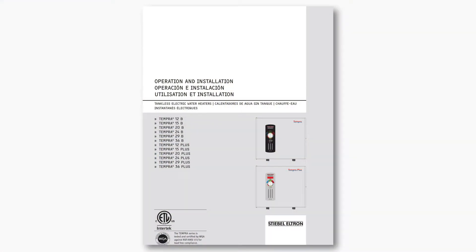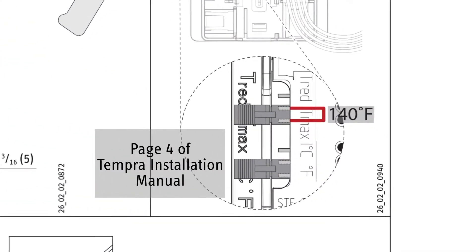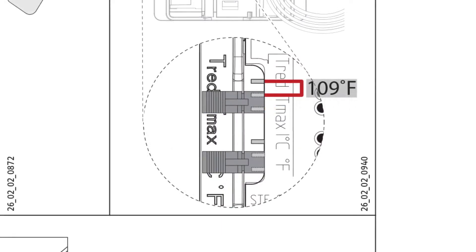This video shows how to limit the maximum output temperature of a TEMPRA Plus water heater to 109 Fahrenheit or 42 Celsius.